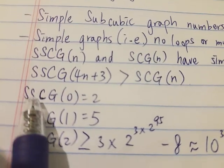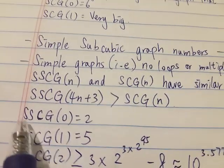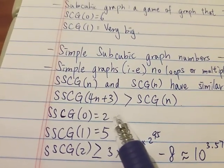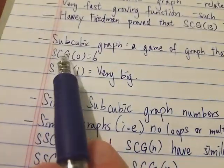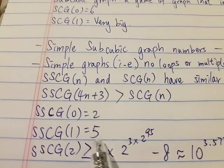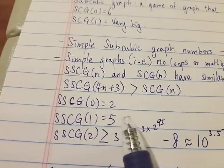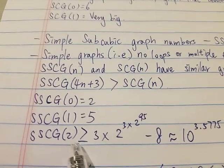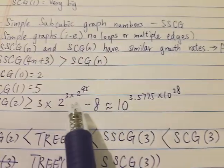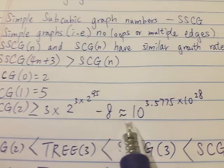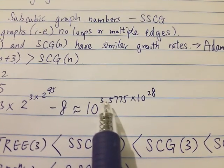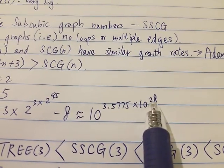Let's look at some examples of the Simple Subcubic Graph Numbers. SSCG(0) = 2, and SSCG(1) = 5 — still not a huge improvement. But if we put 2 into SSCG, the result is something very big. It's around 10 to the power of 3.5775 times 10 to the power of 28.